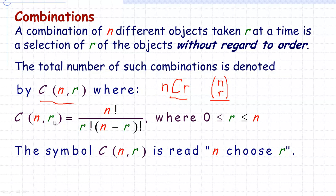A combination of N objects taken R at a time — the formula using factorial notation — is N factorial over R factorial times (N minus R) factorial. It looks a lot like the permutation formula. The only difference is the permutation formula is just N factorial over (N minus R) factorial; there's no additional R factorial multiplied in the denominator. R must be some number between 0 and N. The symbol is often read 'N choose R,' or 'a combination of N objects selected R at a time.'